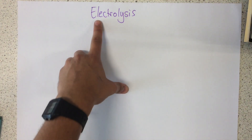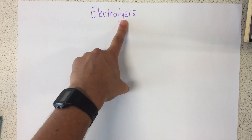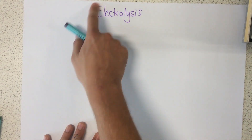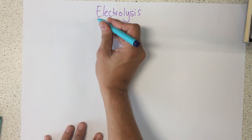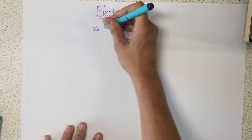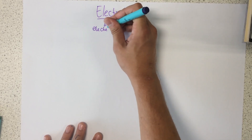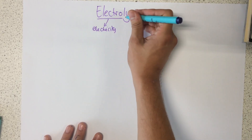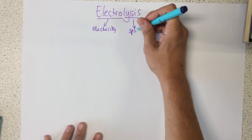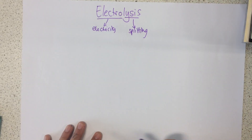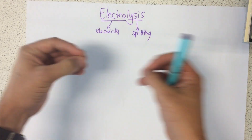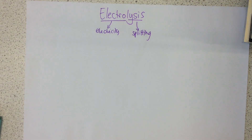Today I'm going to talk about electrolysis. We can figure out what it means just by looking at the word. The 'electro' part shows we use electricity, and 'lysis' means either splitting or separating. So all it means is using electricity to split or separate a substance.